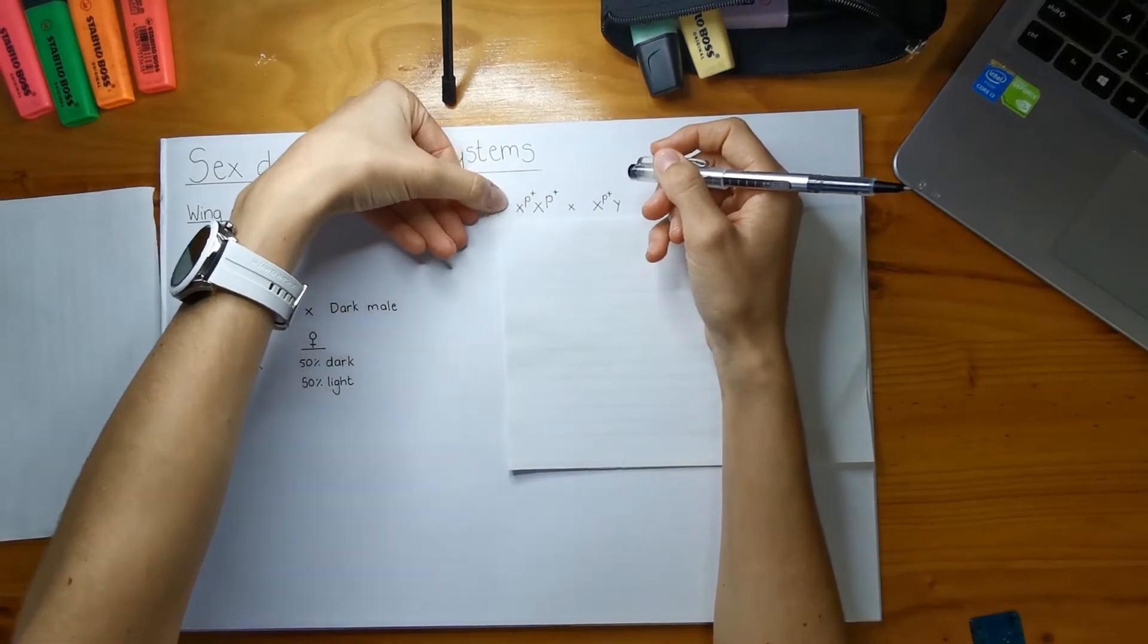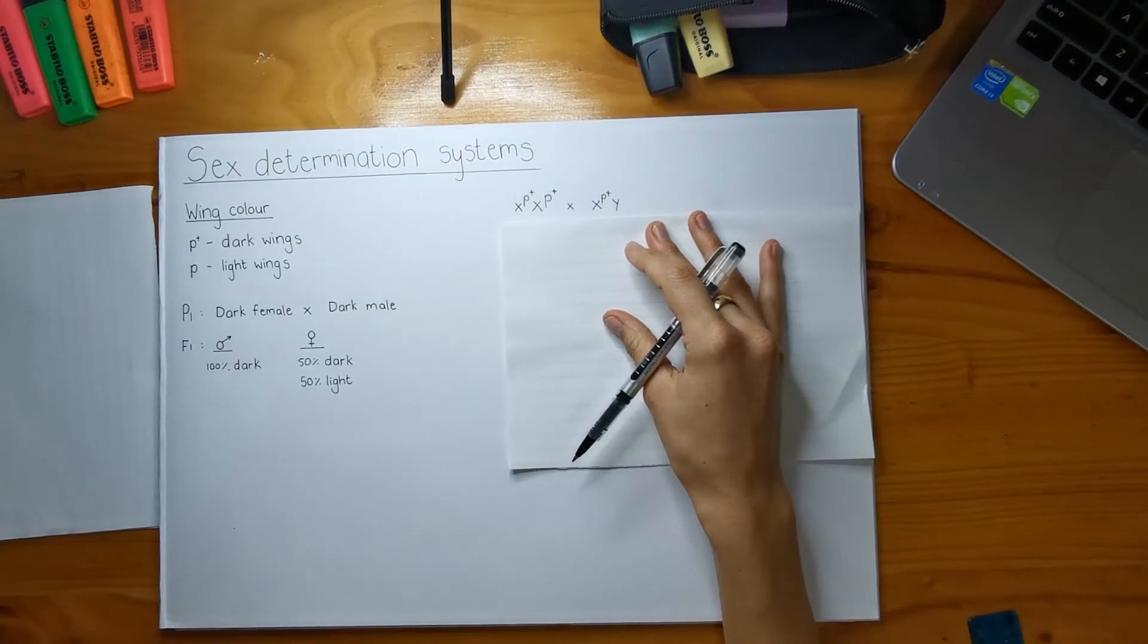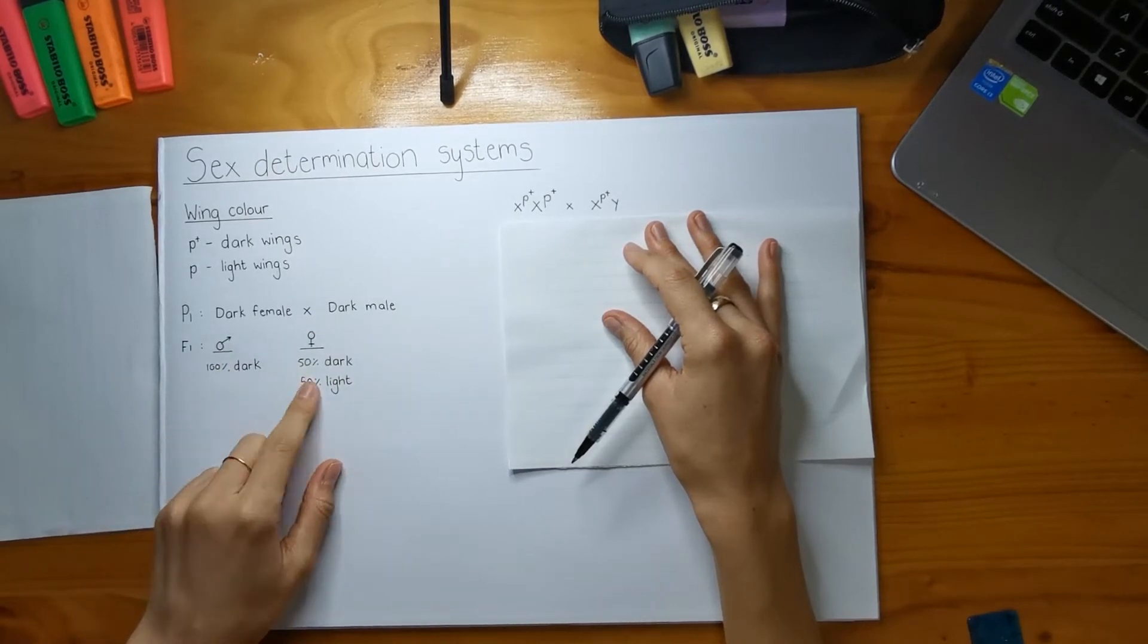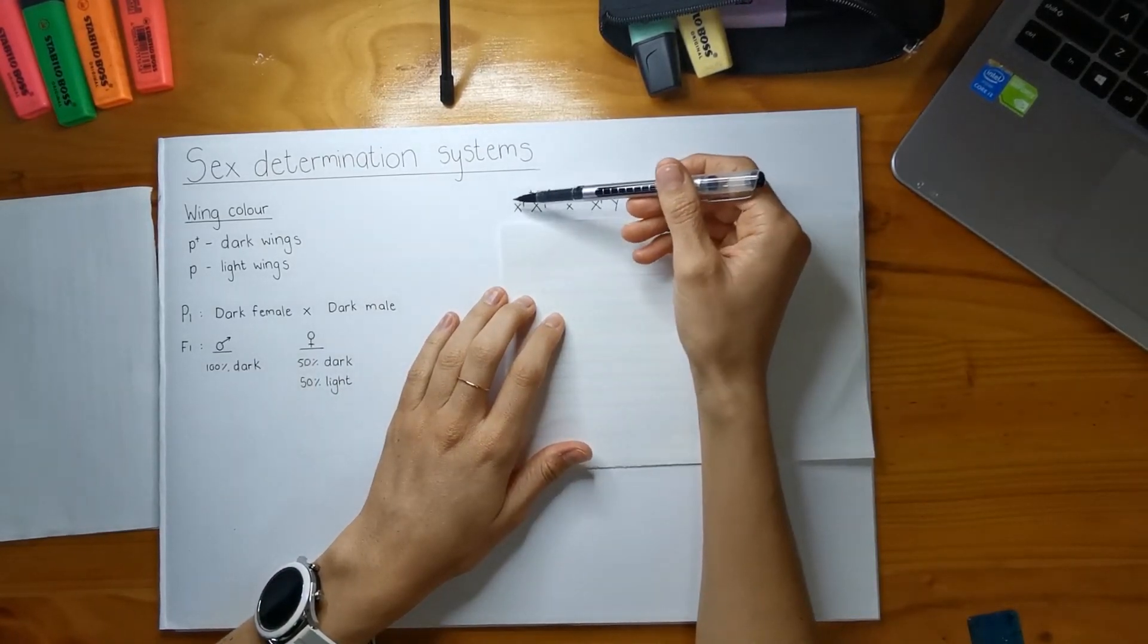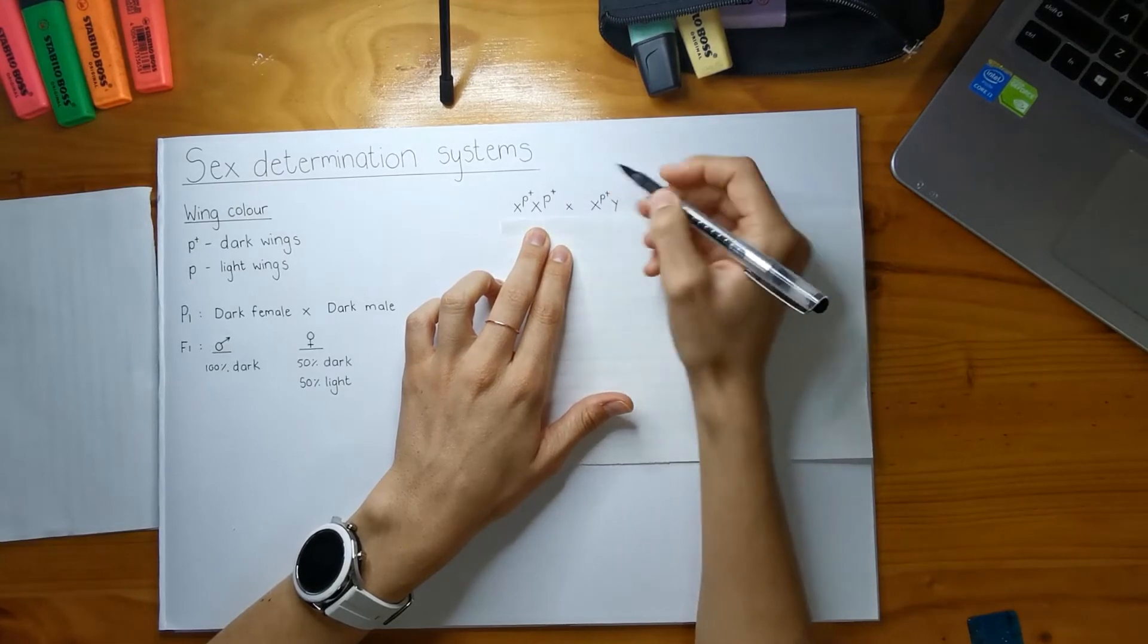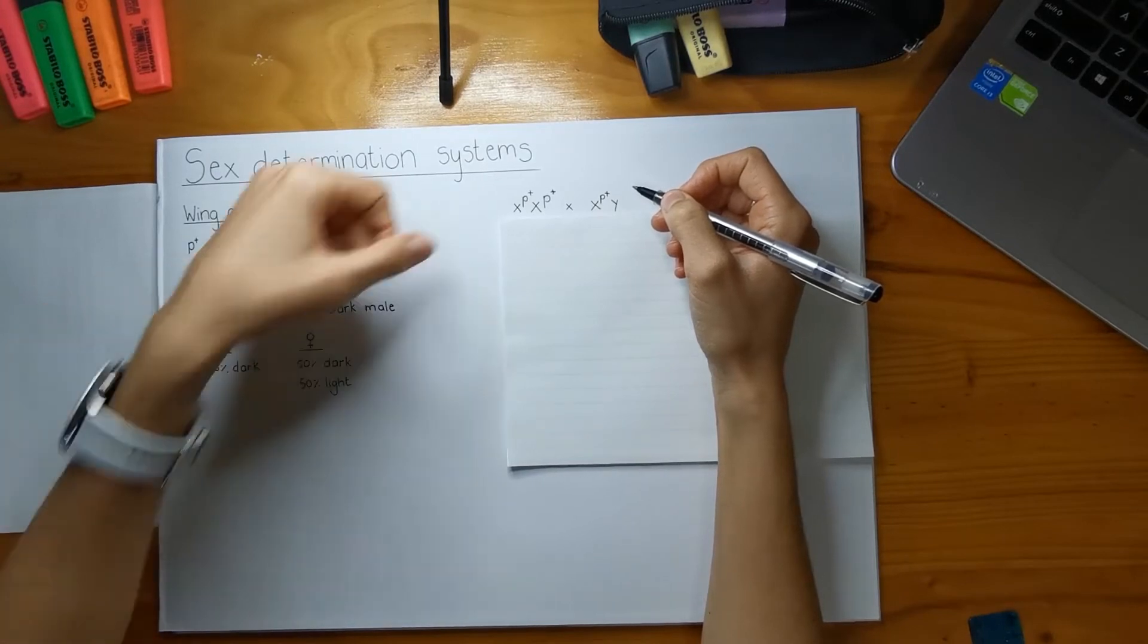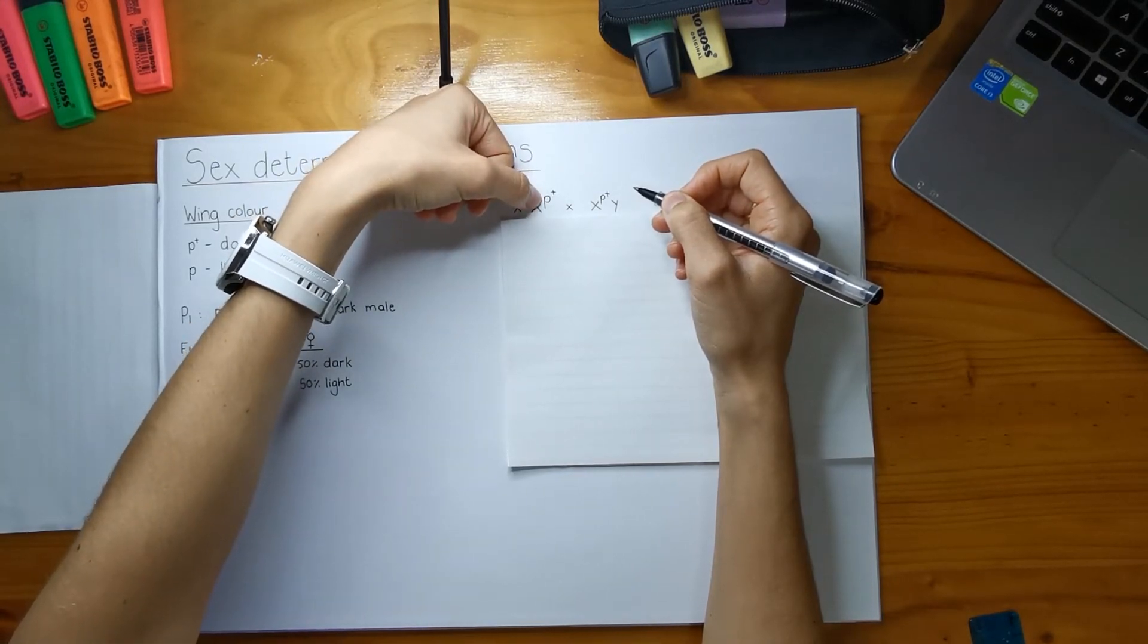He has to express that phenotype and obviously he has his Y chromosome because he is the heterogametic sex and remember heterogametic sex means he has two different sex chromosomes. The females are the homogametic sex, right? Just to reiterate, they want to have these types of offspring. They need the males to be 100% dark and they need the females to be half and half.